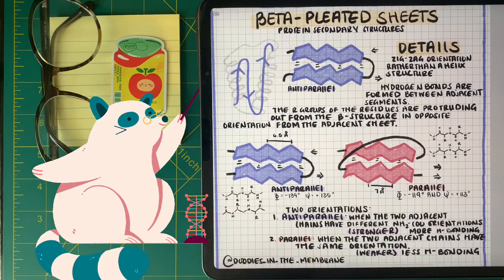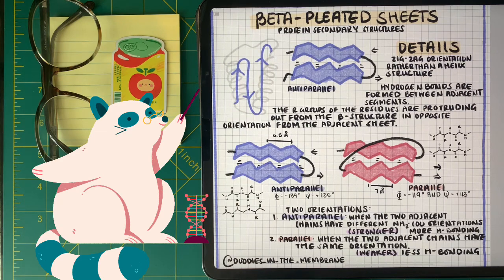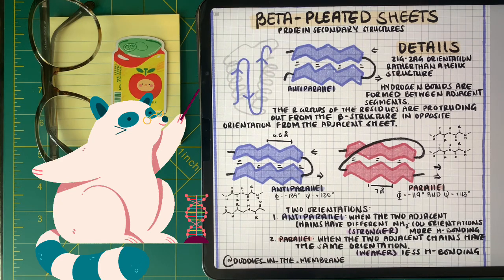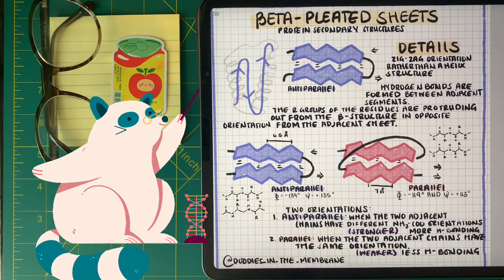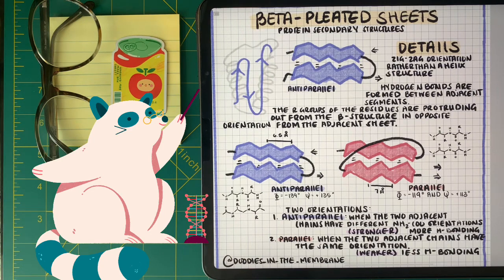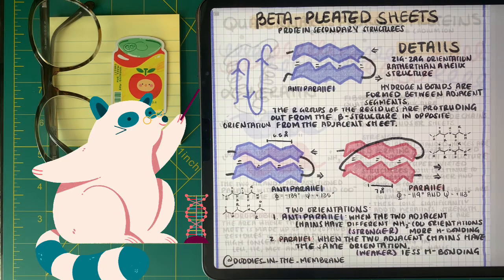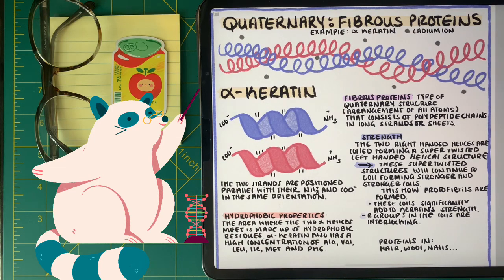The second most common secondary structure is called beta sheets. And this is kind of just a zigzag orientation where the R groups are protruding in alternating fashions outside the orientation of the sheets. Now, because of the amino carboxyl orientation, there's two different ways we can look at beta sheets: anti-parallel and parallel. Anti-parallel meaning that every other zigzag orientation has alternating amino and carboxyl orientations, where parallel the two adjacent chains have the same orientation. Now, in parallel beta sheets, there are less hydrogen bonding, so it's less stable. But in anti-parallel, there's more hydrogen bonding. Hence, we have a more stable secondary structure.